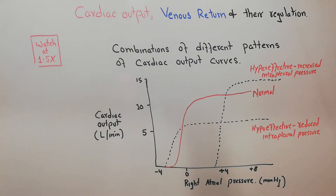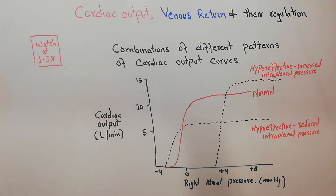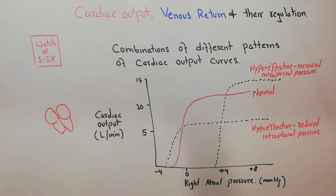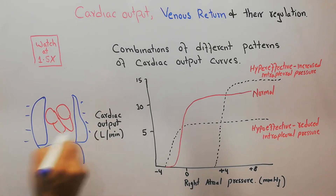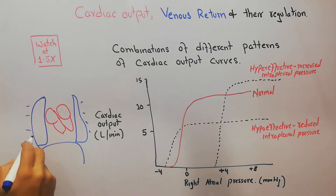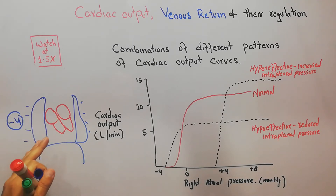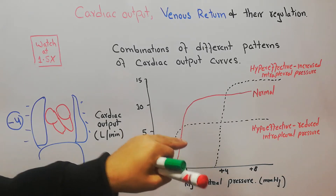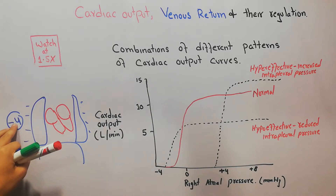In our last lecture we discussed that if the intrapleural pressure is increased — here we have the heart, with lungs on both sides and the diaphragm and ribs — there is normally an intrapleural pressure of around minus four millimeter of mercury. At that normal intrapleural pressure, the normal cardiac output is five liters per minute.